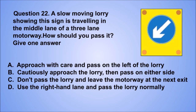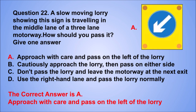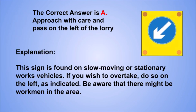Question 22. A slow-moving lorry showing this sign is traveling in the middle lane of a three-lane motorway. How should you pass it? Give one answer. A. Approach with care and pass on the left of the lorry. B. Cautiously approach the lorry, then pass on either side. C. Don't pass the lorry and leave the motorway at the next exit. D. Use the right-hand lane and pass the lorry normally. The correct answer is A, approach with care and pass on the left of the lorry. This sign is found on slow-moving or stationary works vehicles. If you wish to overtake, do so on the left, as indicated. Be aware that there might be workmen in the area.